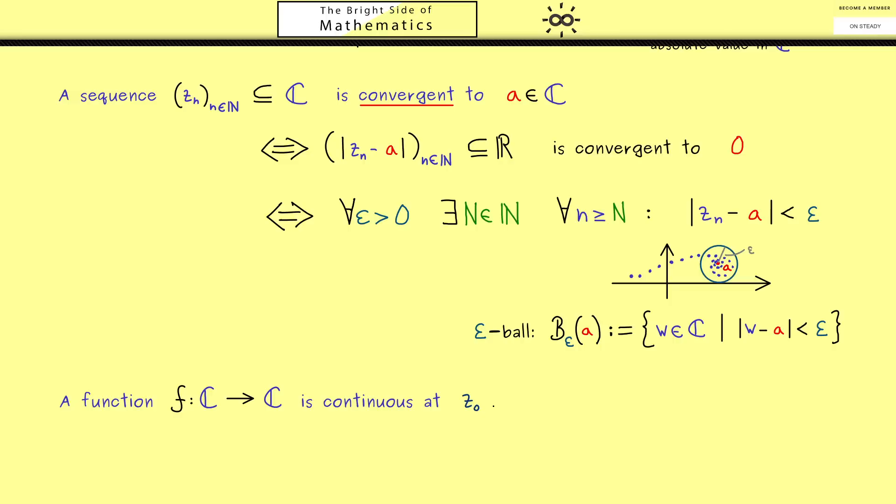We say a function is continuous at the point z_0 in C if for all sequences of complex numbers z_n, we have that if z_n is convergent to the point z_0, then also the images f(z_n) are convergent with limit f(z_0). Here we used a common notation that tells us that a sequence is convergent to a given point.